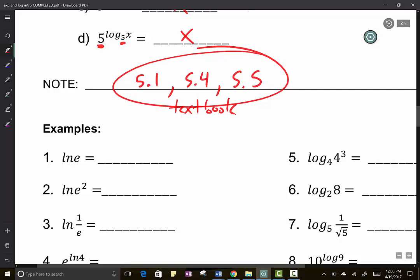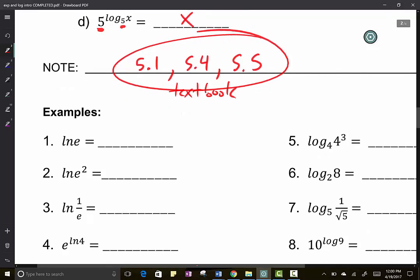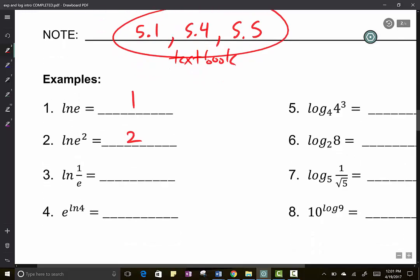What's the natural log of e? Let's call it out. Ln of e? One. Ln of e squared? Two. Ln of one over e. It's the same thing as Ln of e to the negative one. So what is Ln of e to the negative one? It's just negative one.